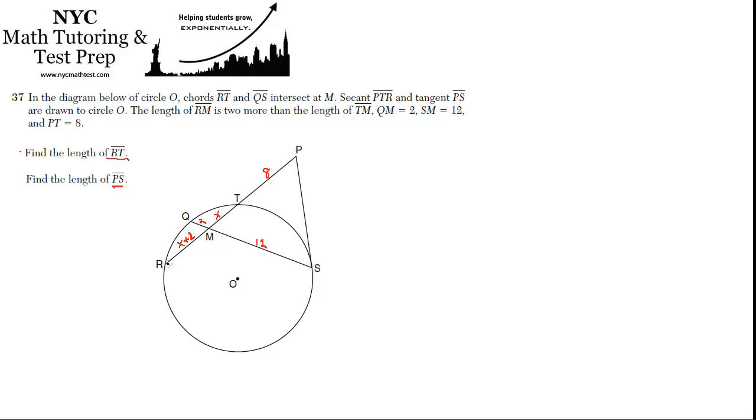So in this case, it's going to be QM. I'll just do it symbolically first and then with numbers. QM times MS is equal to RM times MT. Right? So it's this times this equals this. Got it?